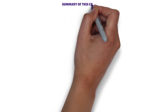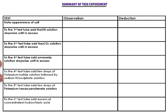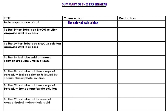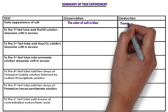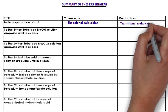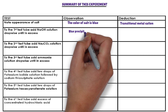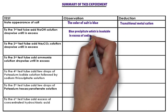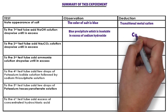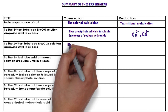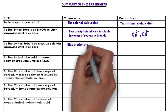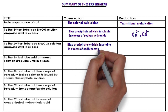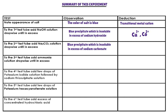Summary of this experiment. Observation: The color of the salt is blue. The blue color of the salt indicates that the cation present in the salt is a transitional metal cation. Sodium hydroxide is added dropwise to the first test tube. The cation that forms a blue precipitate with sodium hydroxide, which is insoluble in excess, is copper-2-ion or cobalt-2-ion. Sodium carbonate solution is added dropwise to the second test tube. The cation that forms a blue precipitate with sodium carbonate, which is insoluble in excess, is copper-2-ion.